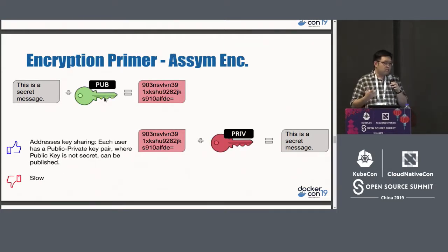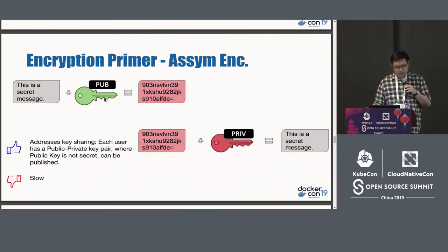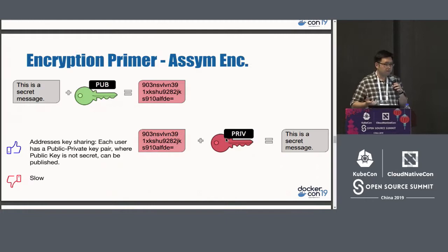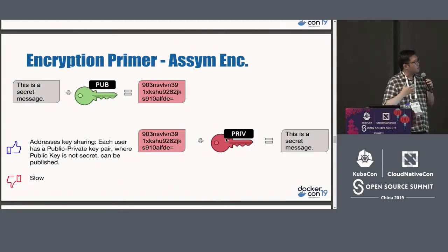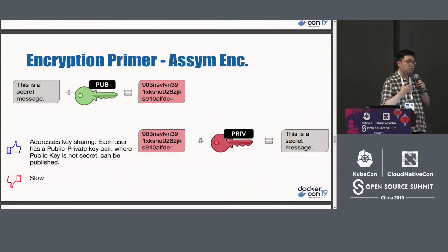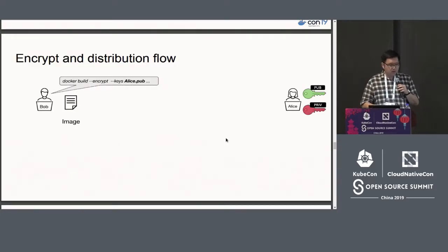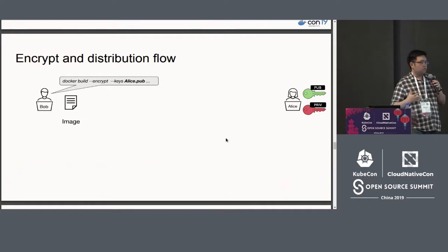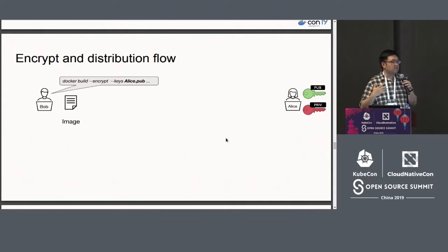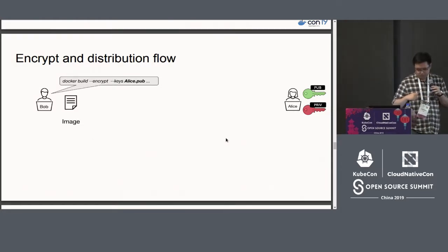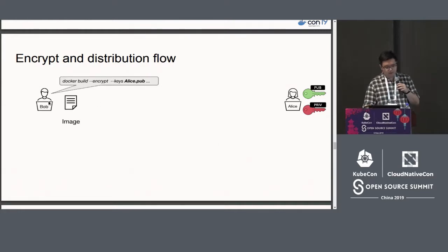Asymmetric encryption has a similar setup except instead of one key you have a keypair — a public and a private key. To encrypt a message you use the public key, and the encrypted message is decrypted by the private key. The great thing is that the public key, as the name suggests, can be made public, which makes authorizing an encrypted image much simpler. Unfortunately, asymmetric encryption is slow, so we combine both — taking symmetric and asymmetric encryption to get the best of both worlds.